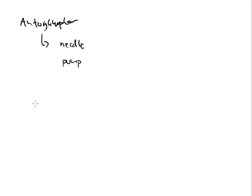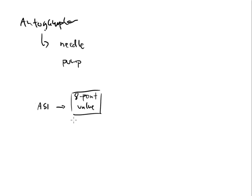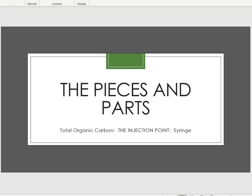We're back at another video. We have an auto injector, the ASI unit, and that auto sampler or injector will inject my sample into the TOC instrument. The very first place the sample goes is called the eight-point valve - that's our first step when tracking where the sample goes. After the eight-point valve, the next place we need to focus on is the injection port - the actual injection point, which is mainly going to be a syringe.